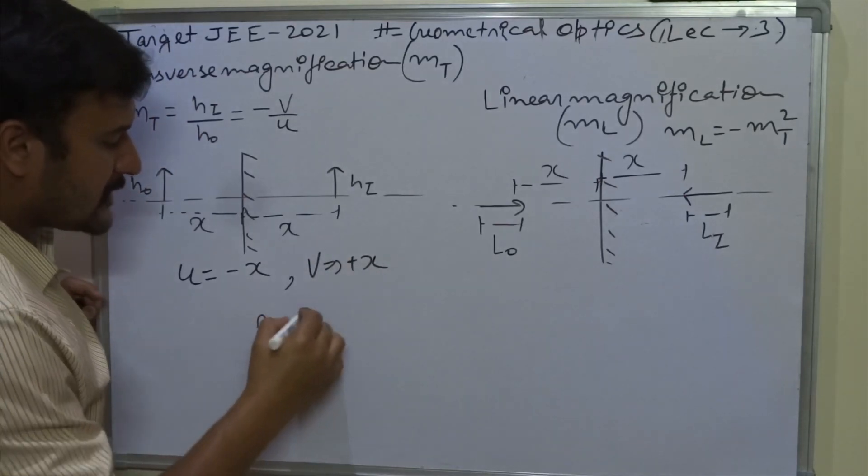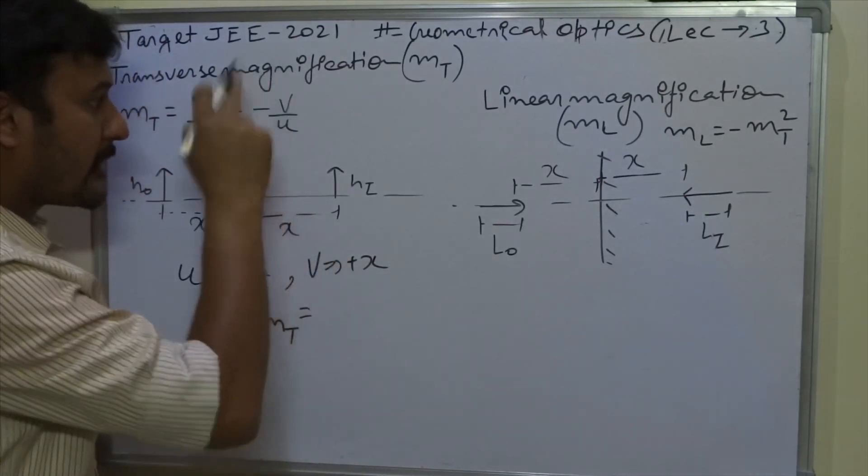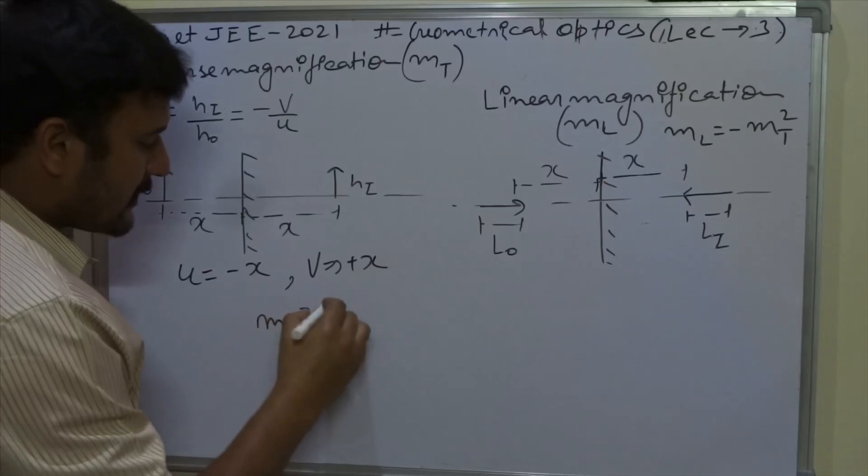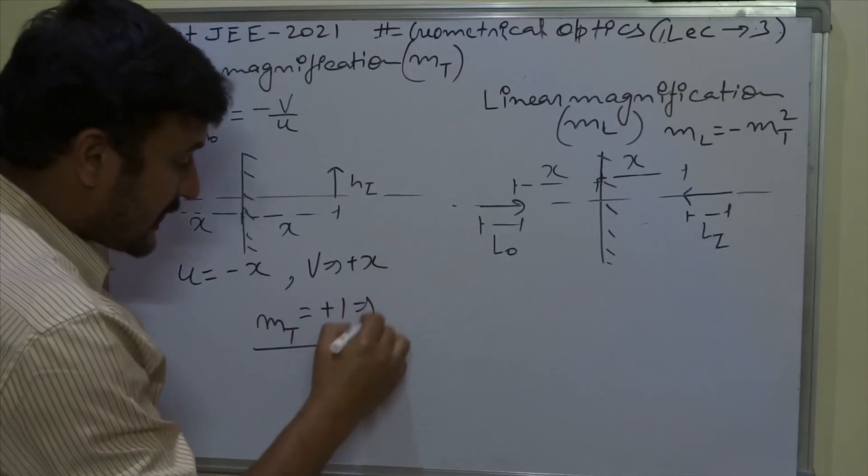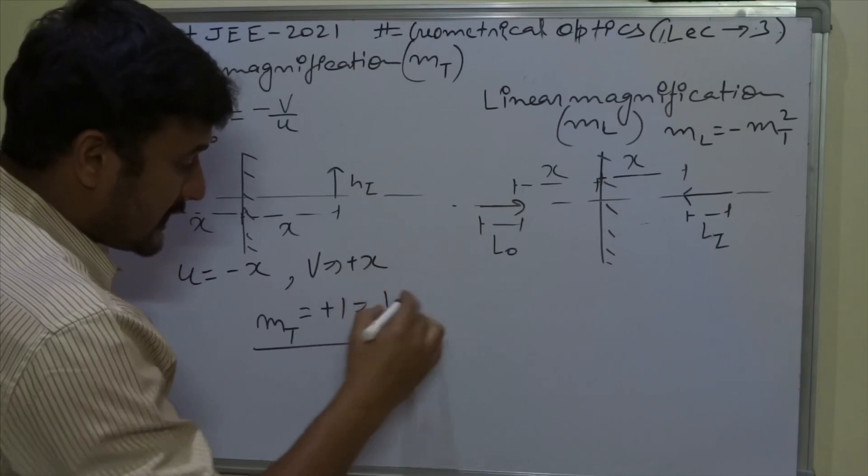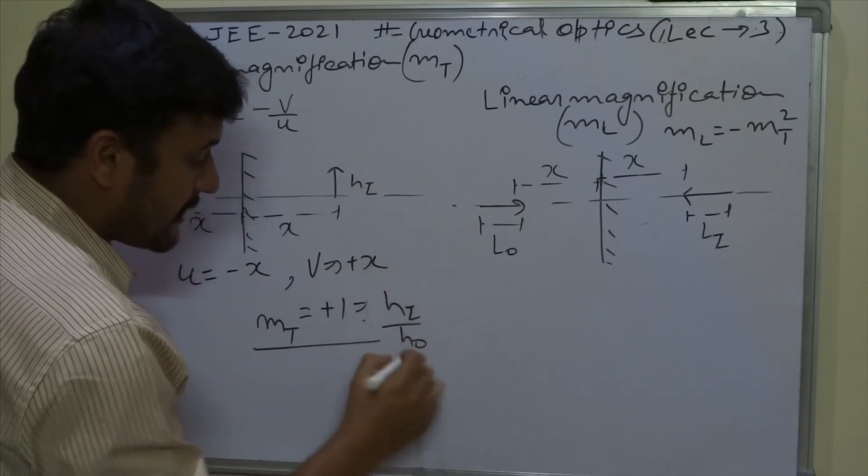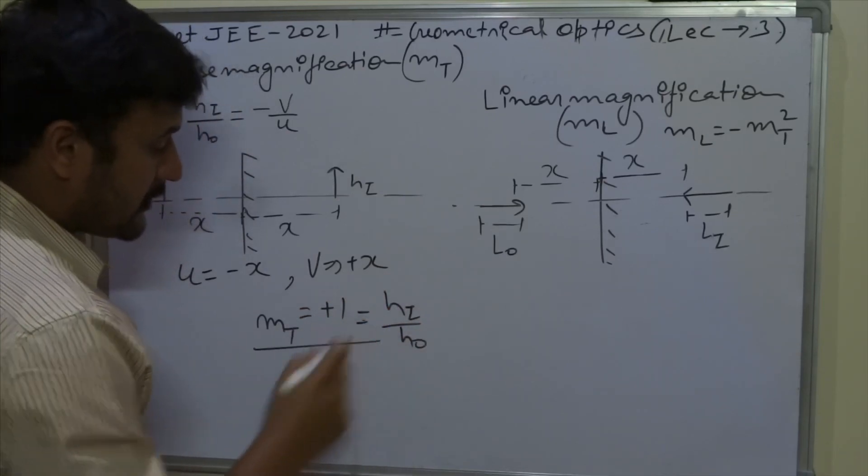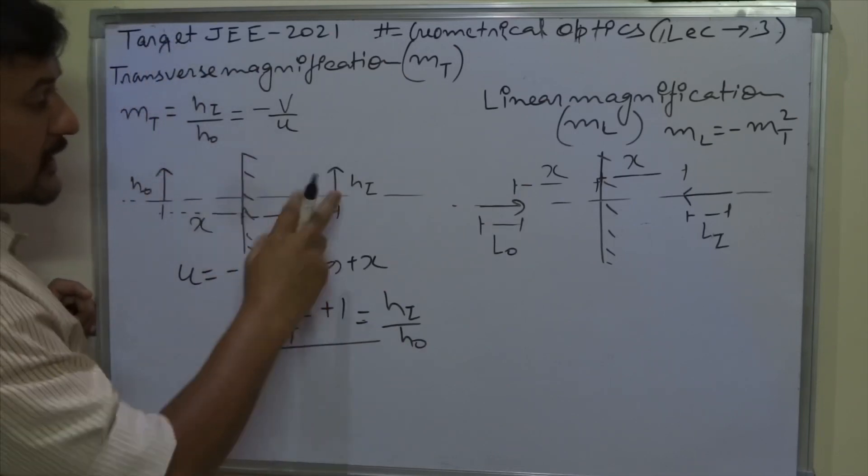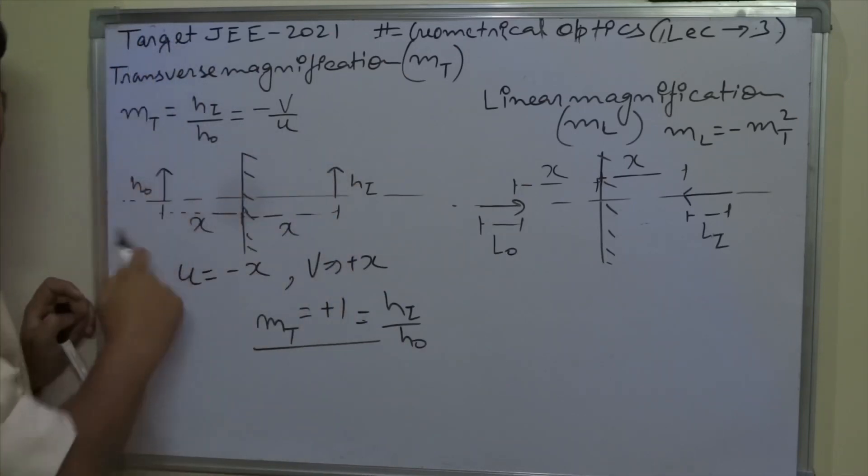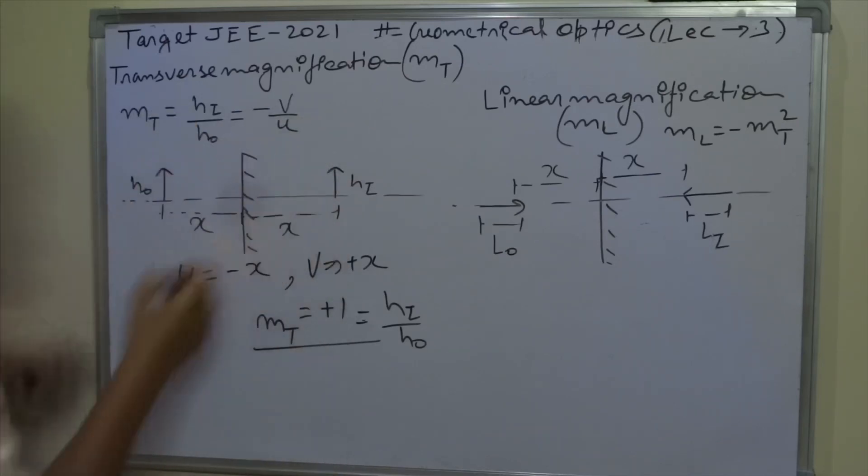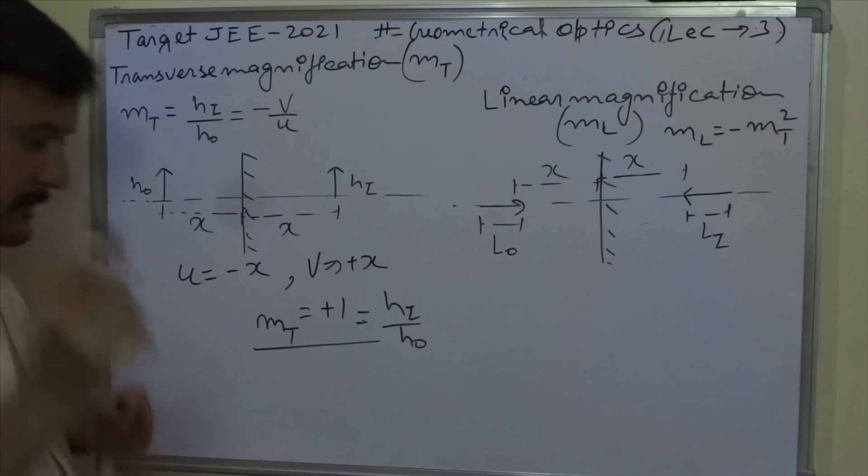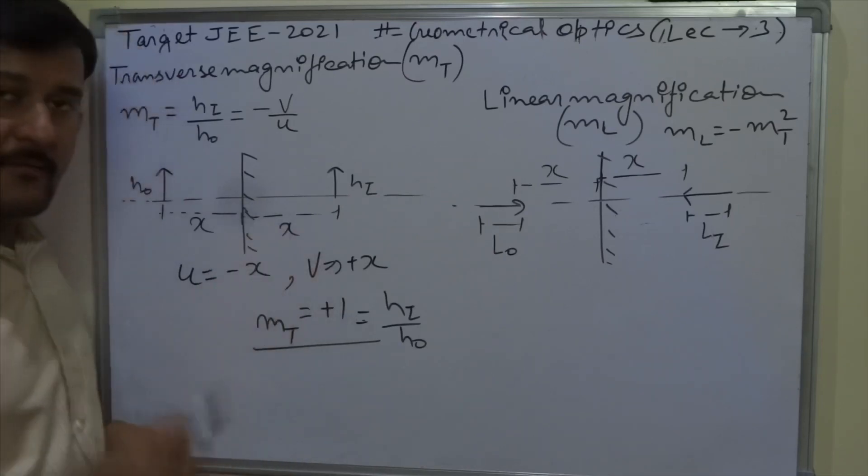So the distance u is minus x, so the v is plus x. So transverse magnification is minus already, minus plus 1 upon minus 1, so it becomes plus 1. This plus is telling us that if object is above principle axis then image is also above principle axis. If object is above then image is also above. Not that this is above and this is below. One thing: what is one telling us? One is telling us that the magnitudes are equal.